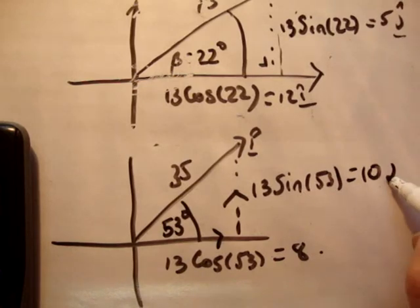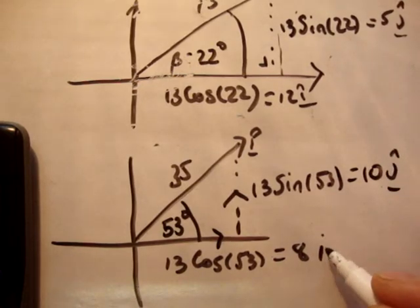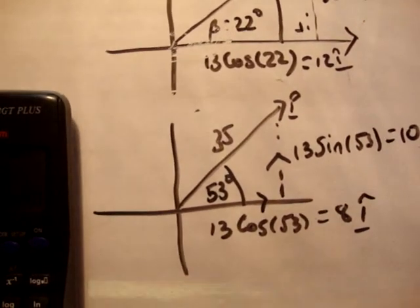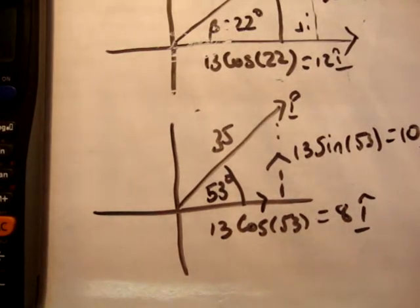So look, this is in the positive j hat. This is in the positive i hat. So if you want to add the two vectors together, we want to add the two vectors together, p plus q.